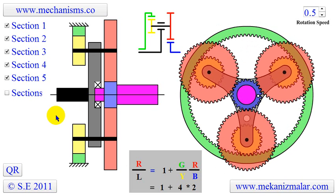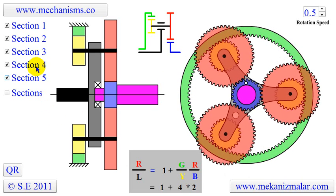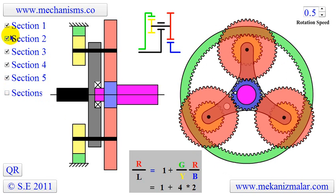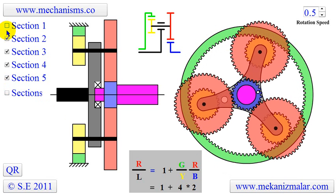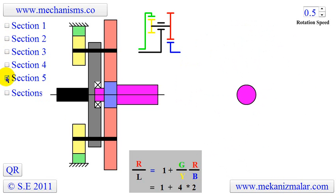Notice that this planetary gear is made up of five sections. First, let's turn off all the section selectors. Now, let's turn them on one section at a time.